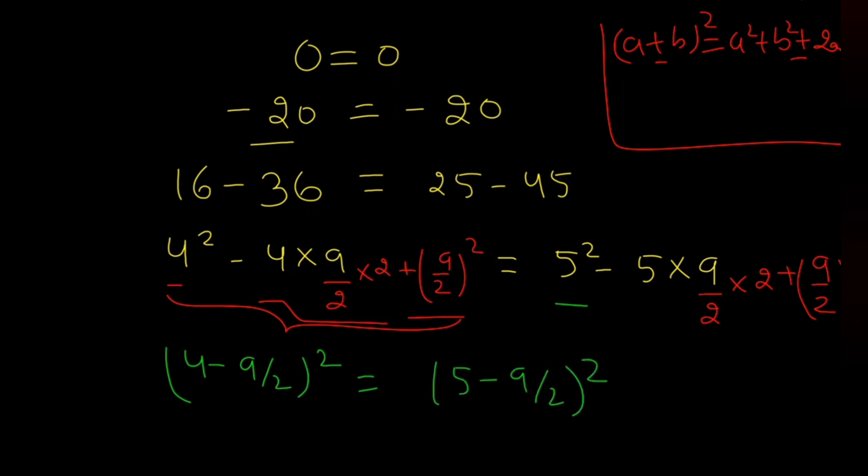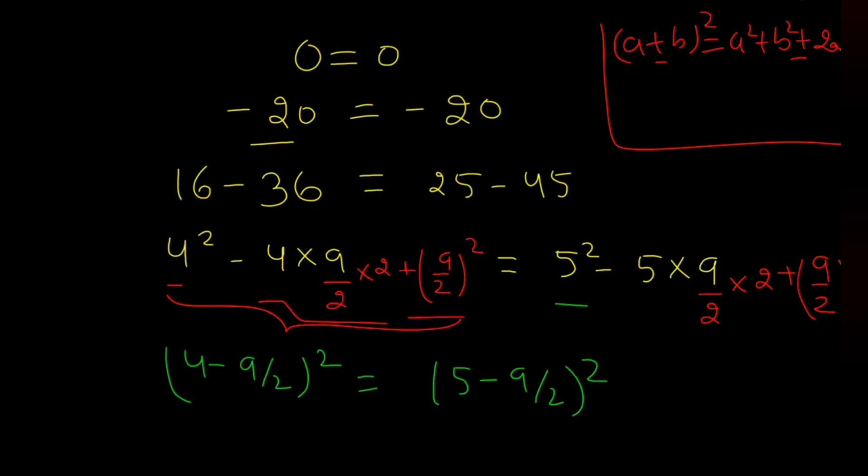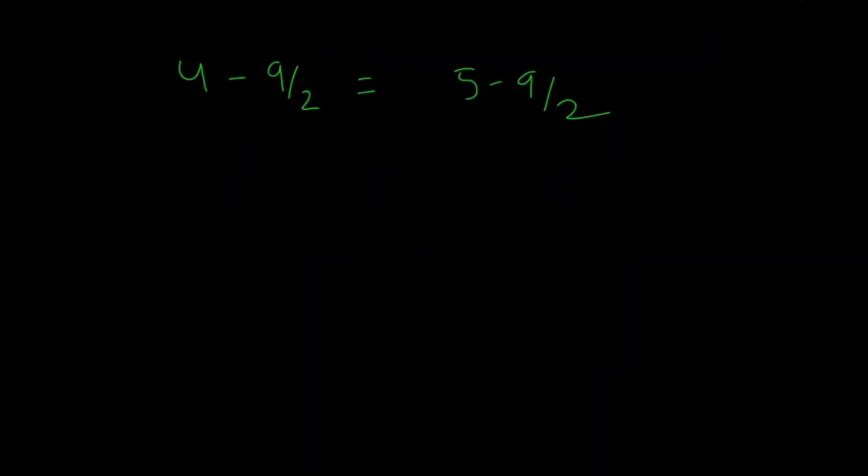Now, if I cancel square or take root on both sides, what I will get: 4 minus 9 by 2 equals 5 minus 9 by 2. What I have done? I have just canceled the square on both sides, taking root on both sides. Now add 9 by 2 on both sides, I will get 4 equals 5, or I can write 2 plus 2 equals 5.